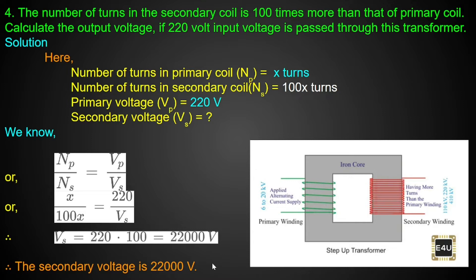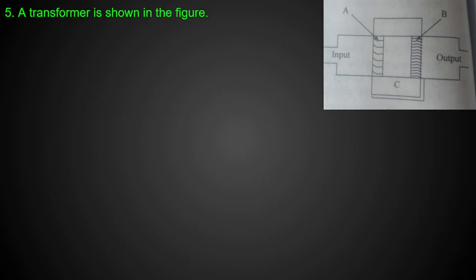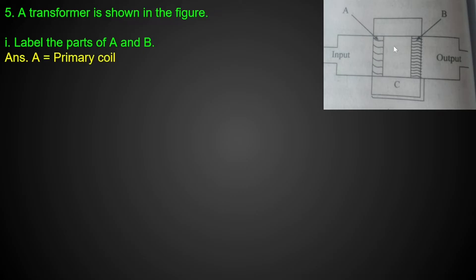This next question is a diagrammatic question. A transformer is given in a figure. We need to label the parts A and B. A is the input side, so A is the primary coil. B is the secondary coil.